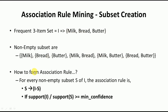The association rule format is: for every non-empty subset S of I, the rule is S → (I minus S). A rule is strong if support of I divided by support of S is greater than or equal to the minimum confidence.